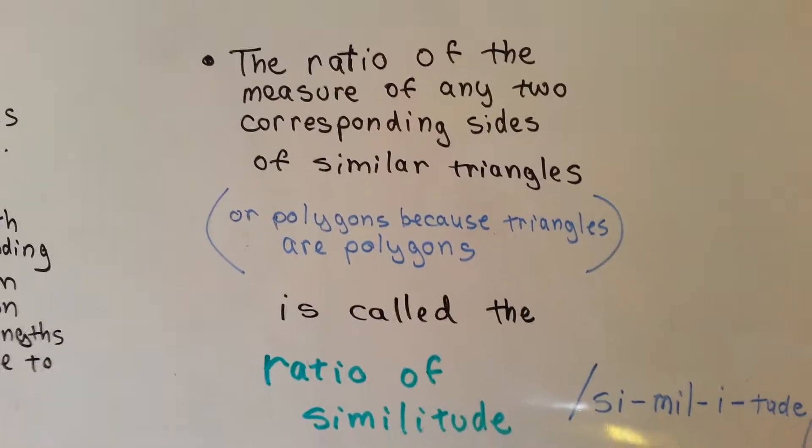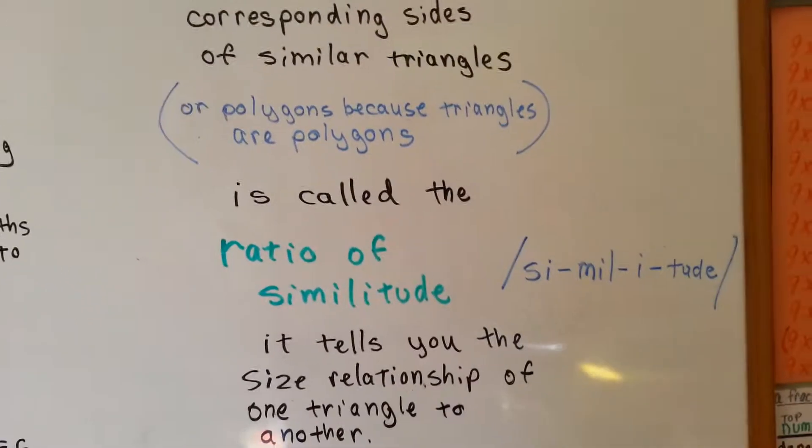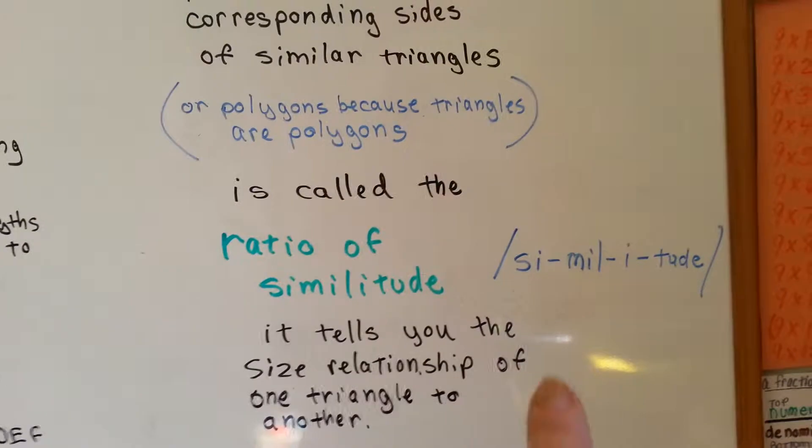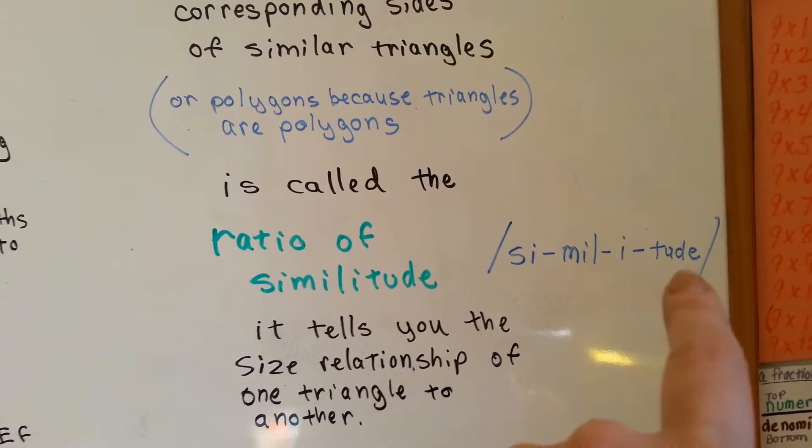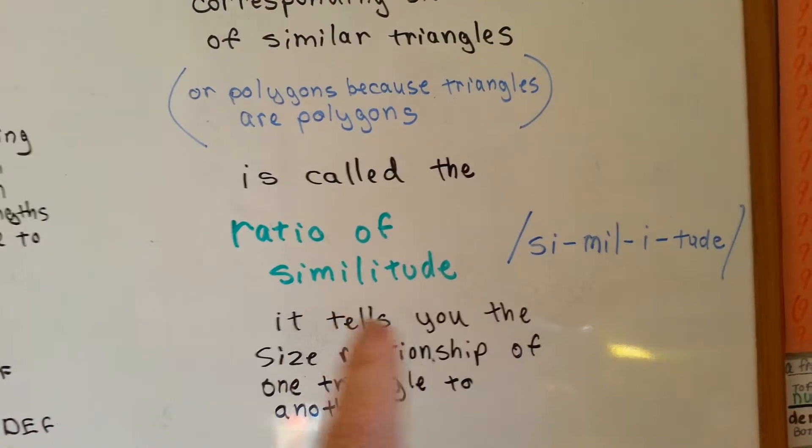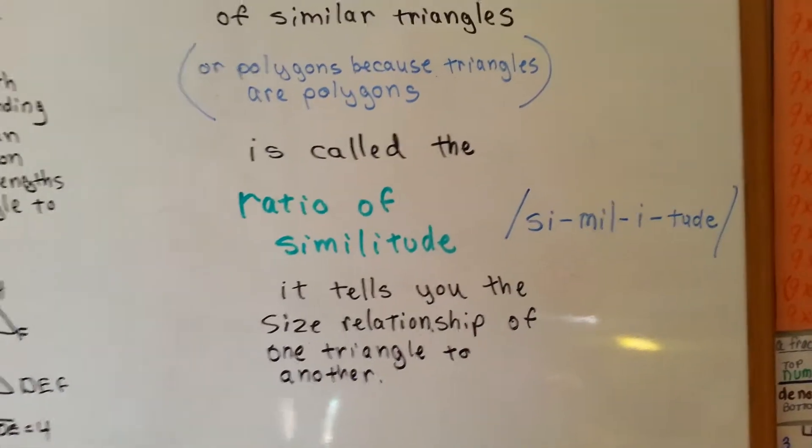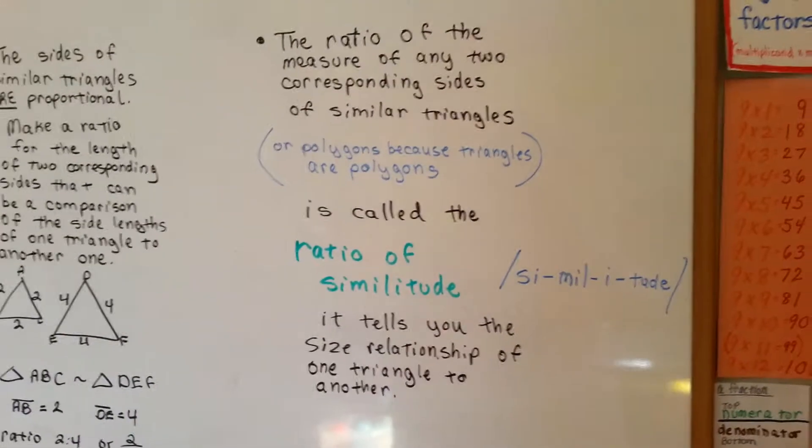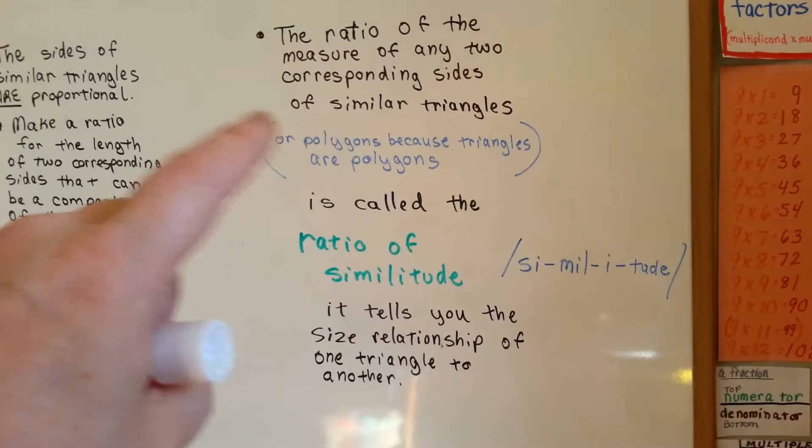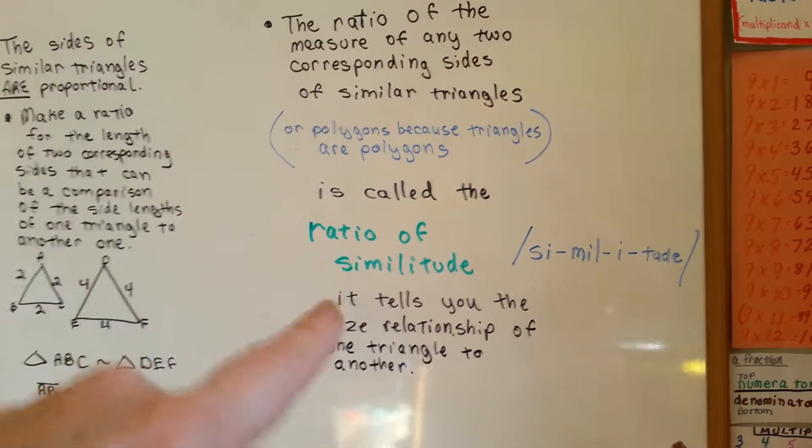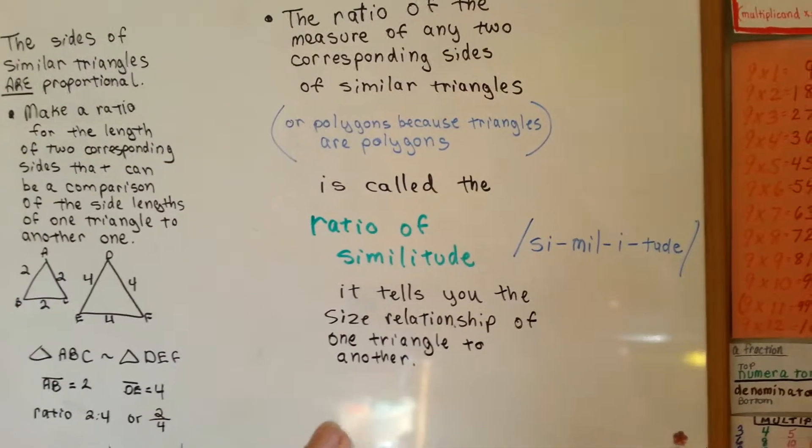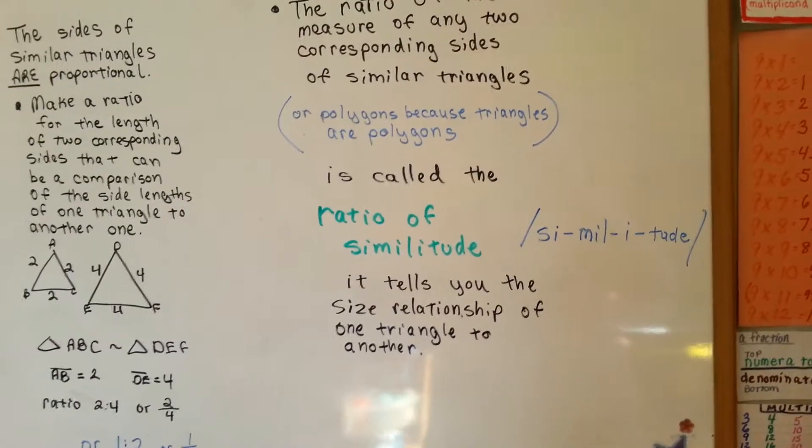The ratio of the measure of any two corresponding sides of similar triangles, you know, or polygons, because triangles are polygons, is called the ratio of similitude, similitude, like similar, similitude. It's called the ratio of similitude, when the measure of two corresponding sides of similar triangles are similar.